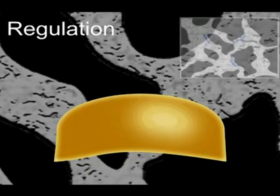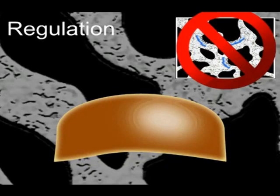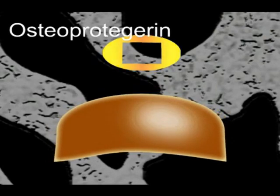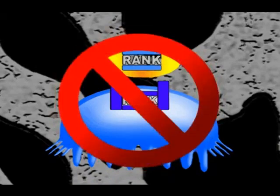Osteoblasts also have a regulatory mechanism which protects bone from resorption. Osteoblasts secrete osteoprotegerin, which when bound with RANK ligand, protects the bone from osteoclastic activity.